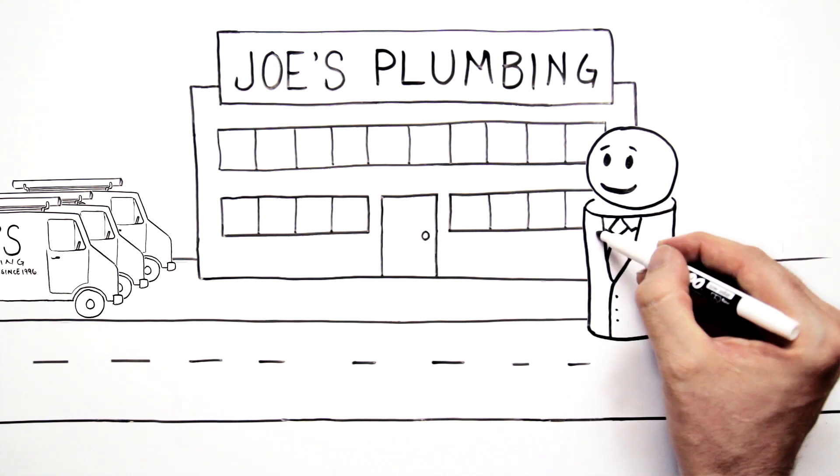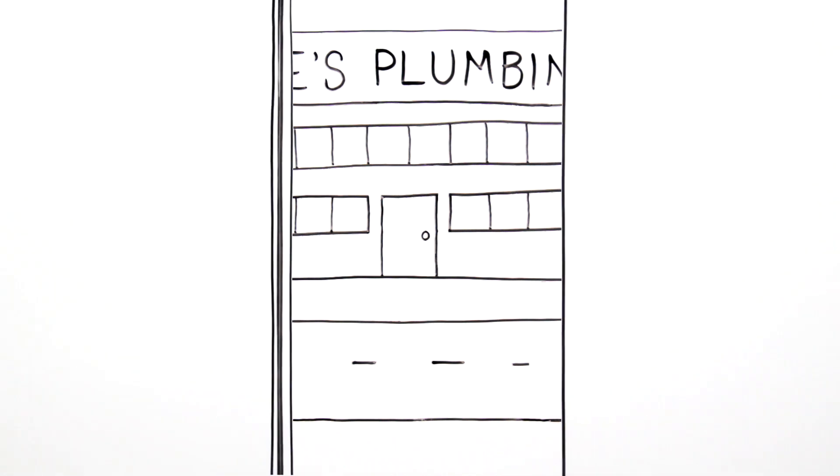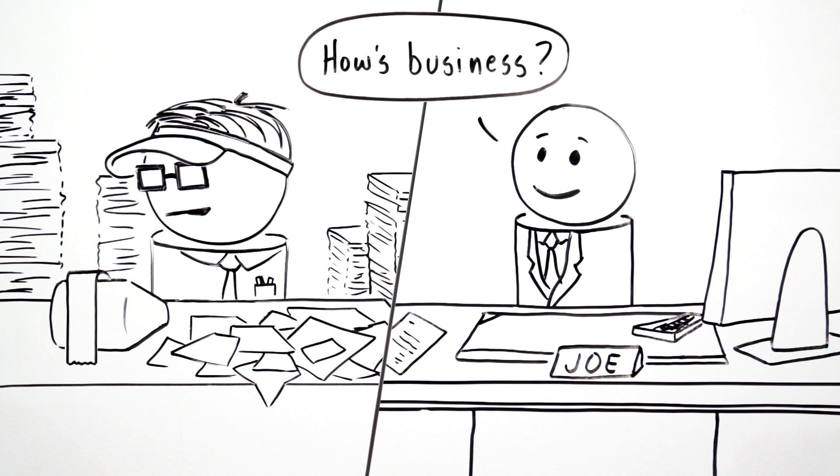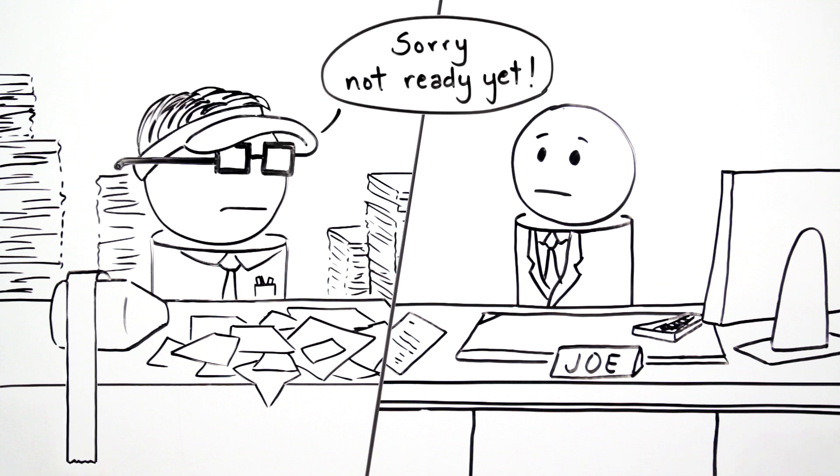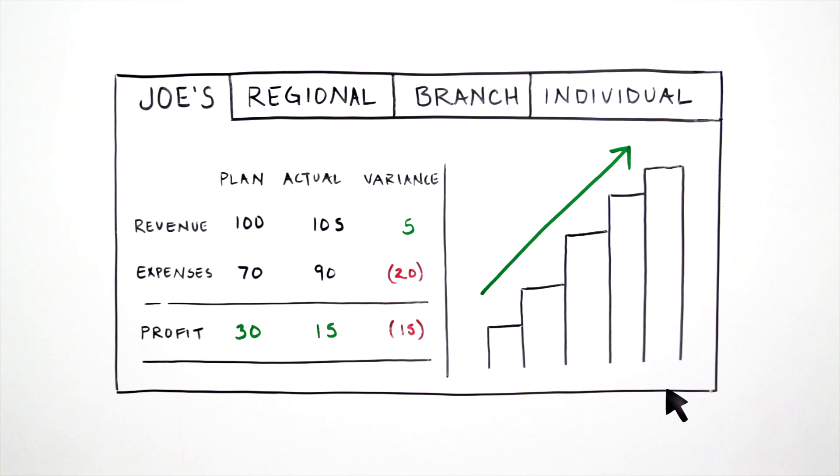Joe's plumbing business is taking off. Before finding Mobi, Joe had to wait months for his accountant to tell him how his business was performing. Now, with just a few clicks, Mobi gives Joe a daily, easy-to-understand view of his costs and team's performance at regional, branch, and even individual levels.